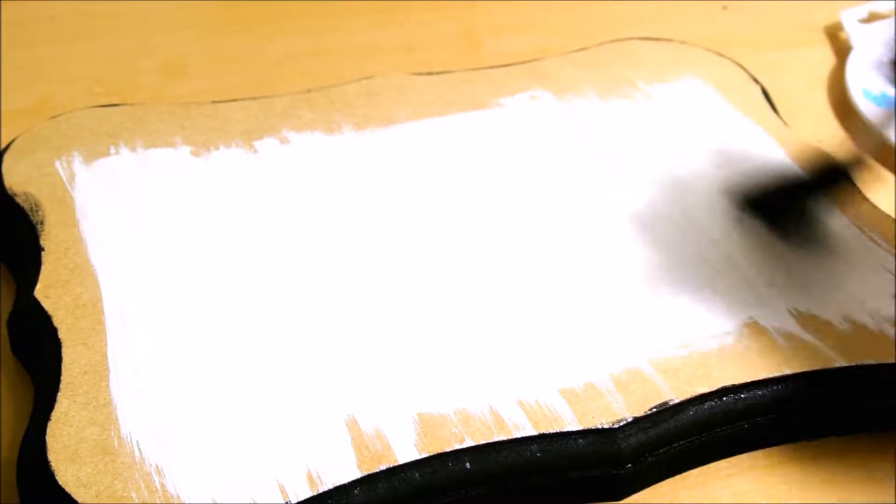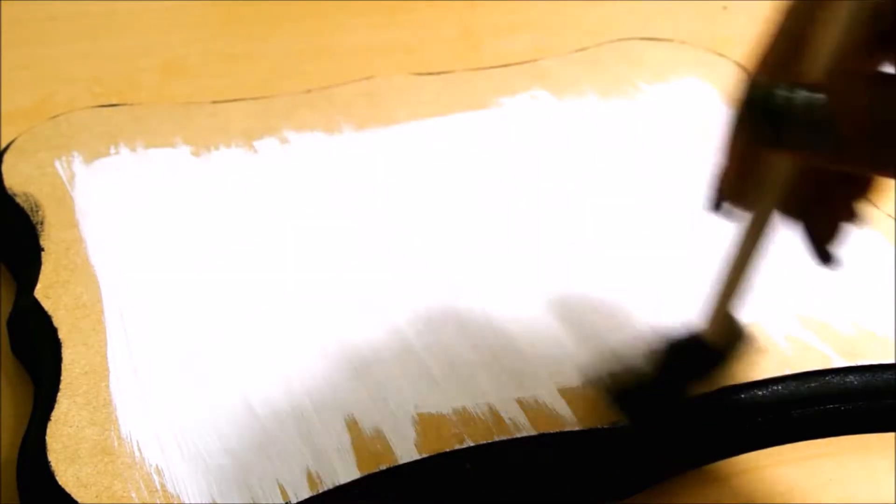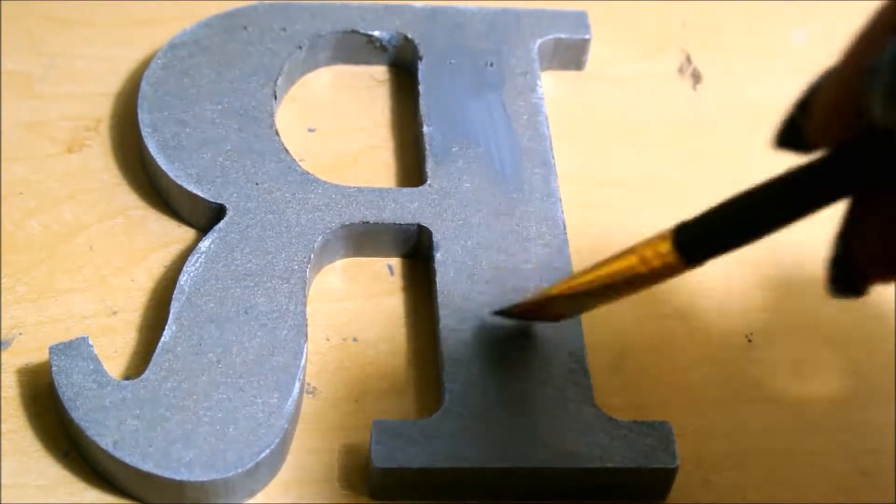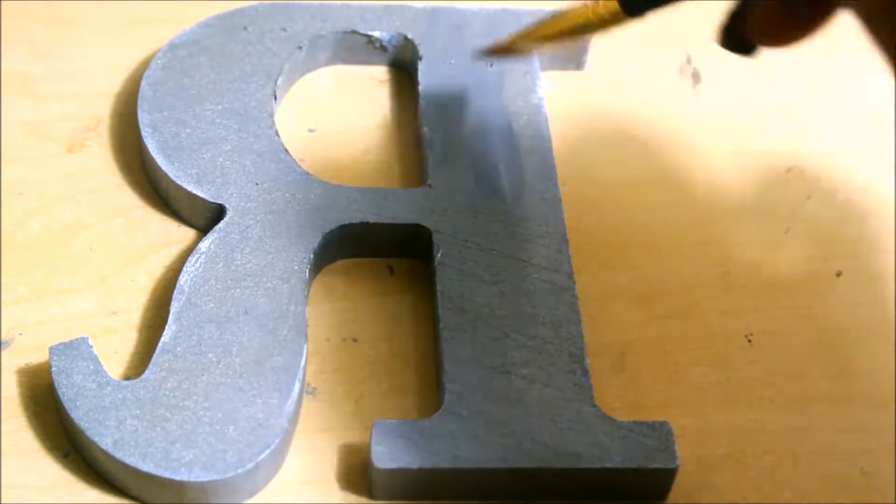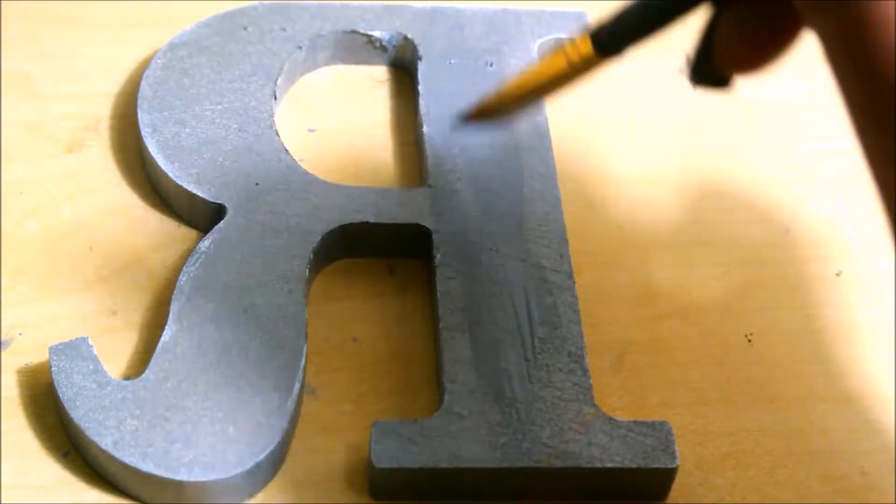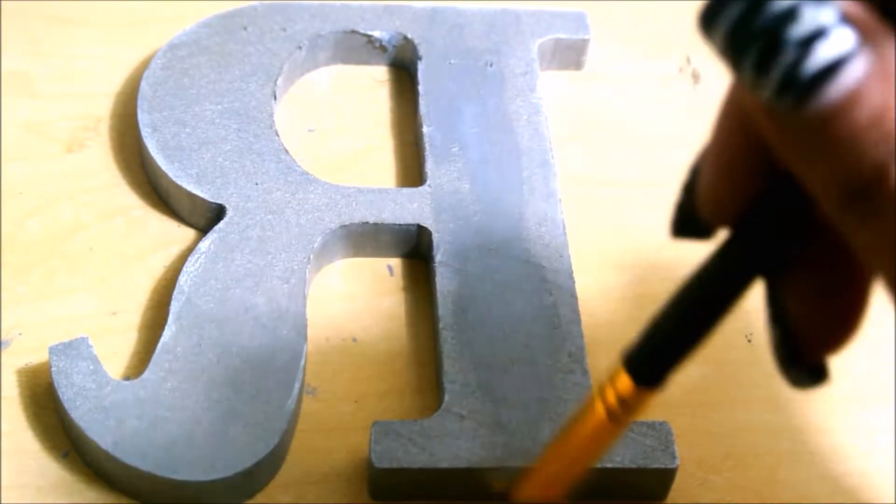Now to the best part, the letters. I use two wooden letter R's and what I'm going to do is paint them with this metallic silver paint by Folk Art. I gave it a couple of coats with a couple minutes drying time in between.